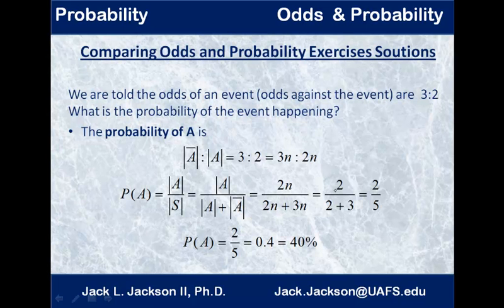And then the numerator will be the event you're looking at. If you're talking about the odds against the event, it's the second number that goes on the numerator here. Of course, the actual size of A is 2n, and the size of the sample space is 5n for whatever n might have been. But the n's cancel out, so we can just ignore those. And so, we get the probability of A is 2 fifths, which is 0.4 in decimals and 40% in percentages.